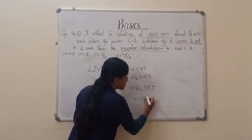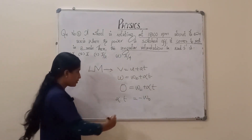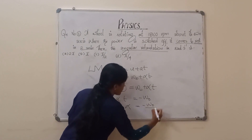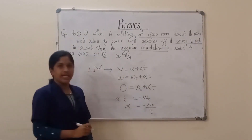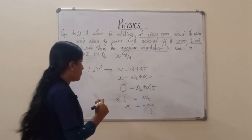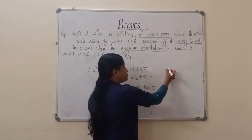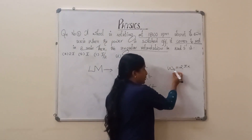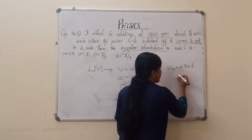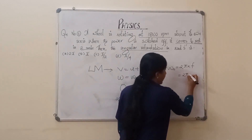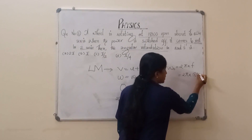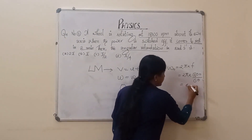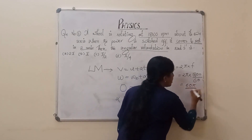The final angular velocity is zero. So α = −ω₀ / t. Now, ω₀ = 2πf, which is 2π into the number of revolutions per second. So we get ω₀ = 60π as the initial angular velocity.